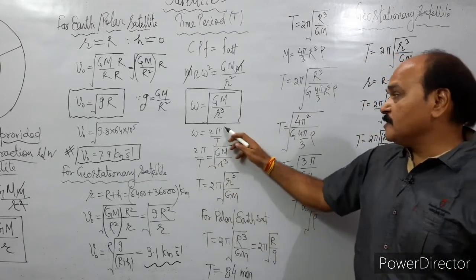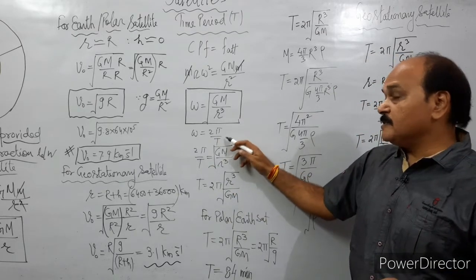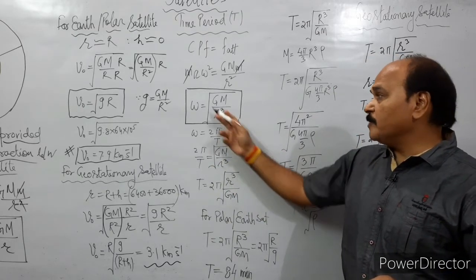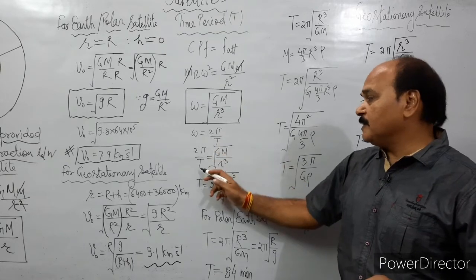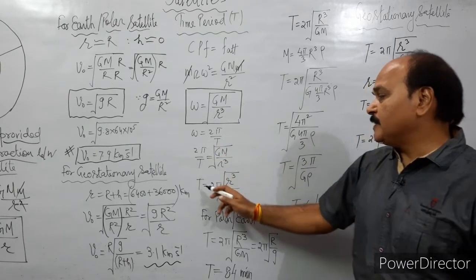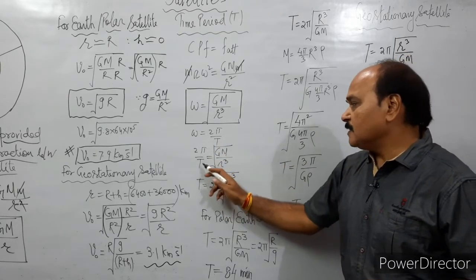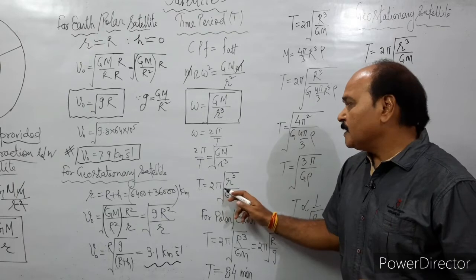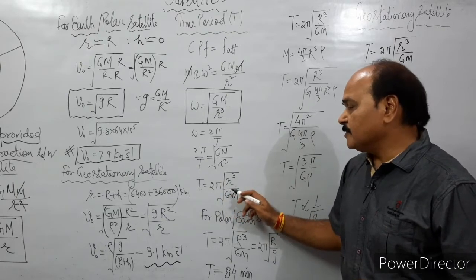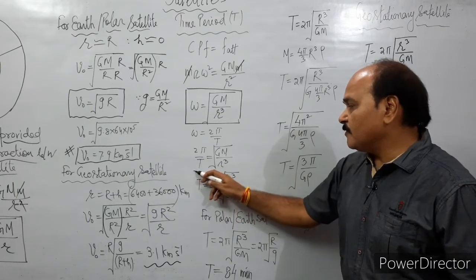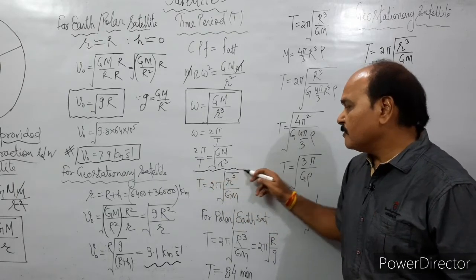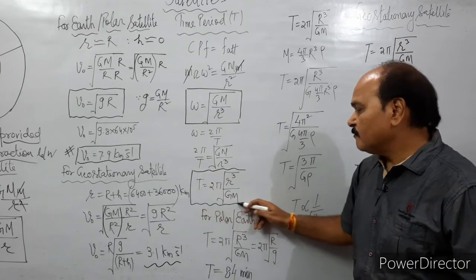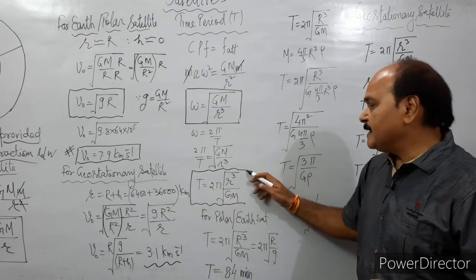We know this angular frequency is 2π/T, where T is the time period of revolution. Writing ω = 2π/T, we get T = 2π√(r³/GM). This is the expression for the time period for any satellite.